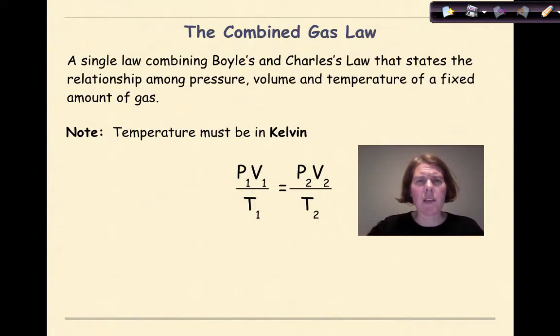So first, what is the Combined Gas Law? Combined Gas Law is a single law that combines Boyle's and Charles Law that states the relationship among pressure, volume, and temperature in Kelvin of a fixed amount of gas. Remember here, the temperature must be in Kelvin. There's another law that's sort of incorporated into this, which is a pressure-temperature relationship, which is known as Gay-Lussac's Law, but we don't really cover that in Regents Chemistry.